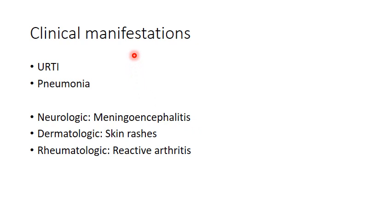Clinical manifestations of Mycoplasma pneumoniae include upper respiratory tract infection manifesting as pharyngitis or tracheobronchitis, pneumonia which we will deal with in the next slide, and some extrapulmonary manifestations like meningoencephalitis, skin rashes and reactive arthritis.